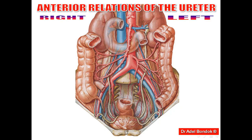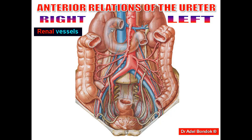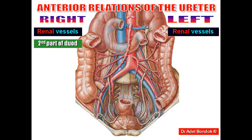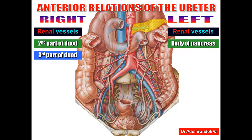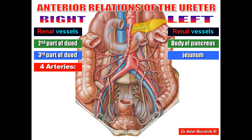Regarding the anterior relations of the ureter, from above downward — for the right ureter: renal vessels are present in front of the renal pelvis. Then the second part of the duodenum. For the left ureter: renal vessels, and then the body of the pancreas. Then the third part of the duodenum is anterior to both ureters. The right and left ureters are each crossed by four arteries.